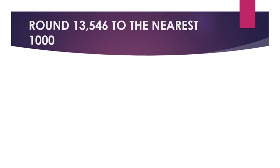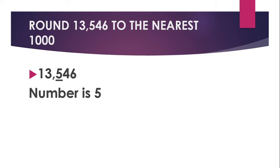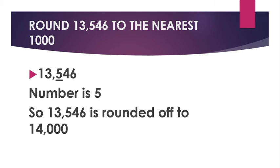Now let's learn through an example. Round 13,546 to the nearest thousand. First, look at the number at the hundreds place, that is 5. Since the number is 5, 13,546 is rounded off to the nearest thousand: 14,000.